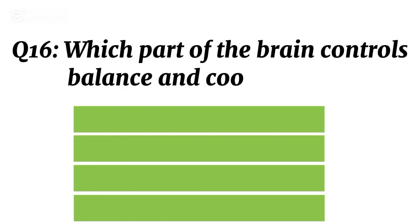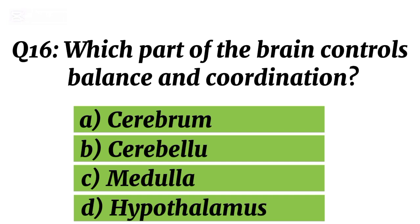Question 16. Which part of the brain controls balance and coordination? Correct option B. Cerebellum.